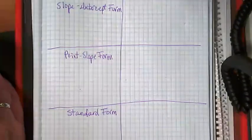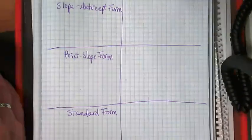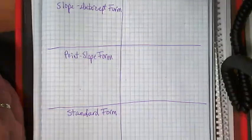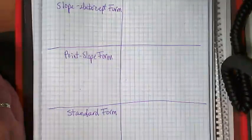And the third one is called standard form. Again, these are the three kinds of linear equations. All three of these, when we take the equation and we put it on a graph, it makes a straight line. And they could all be rewritten in each other's form.